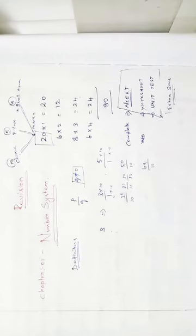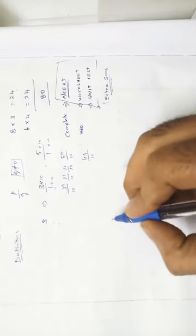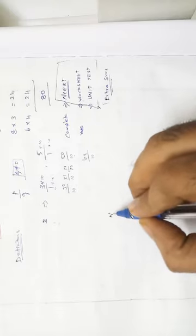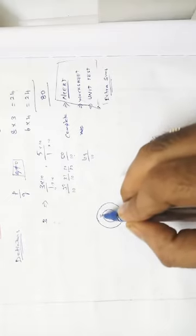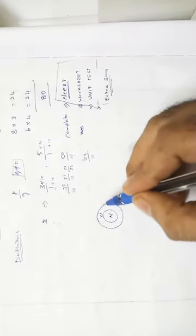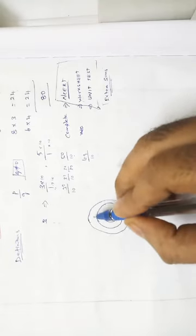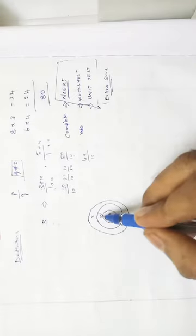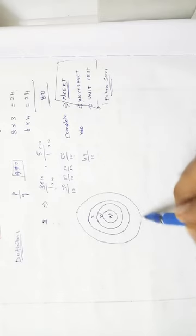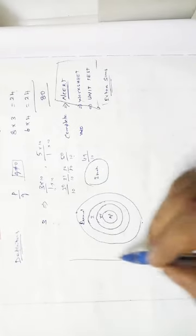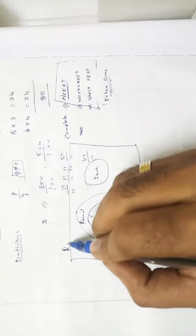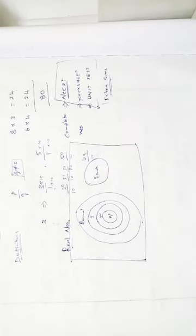Exercise 1.2 is fully about definitions. Natural numbers are from 1 to infinity. Including zero gives whole numbers. Including negative numbers gives integers. All integers are also called rational numbers. Irrational numbers are separate, and the combination of rational and irrational is called real numbers.